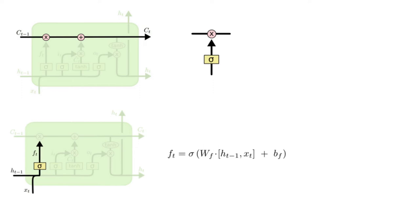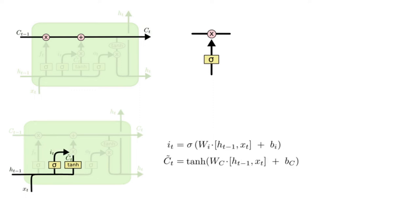The next step is to decide what information we are going to store in the cell state. This has two parts. First, a sigmoid layer called the input gate layer decides which values will update. Next, a tanh layer creates a vector of new candidates, C̃_t, that could be added to the state. In the next step, we will combine these two to create an update to the state.